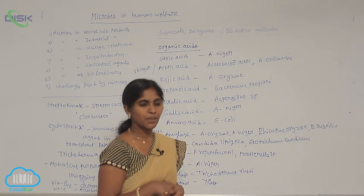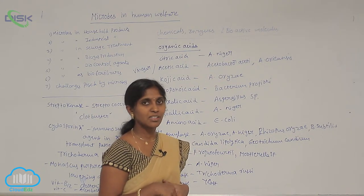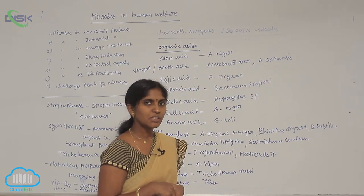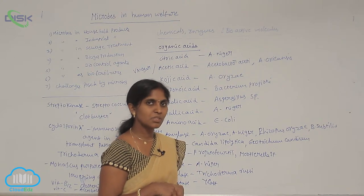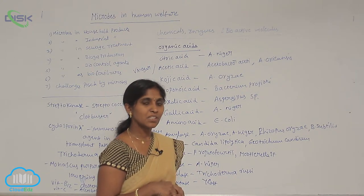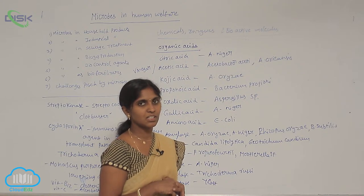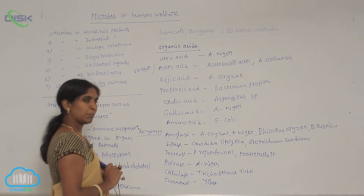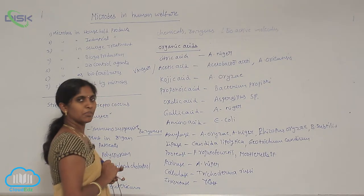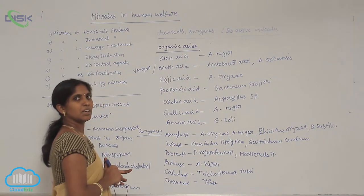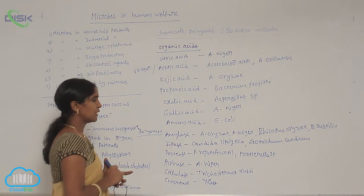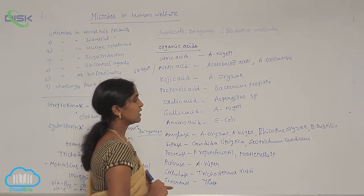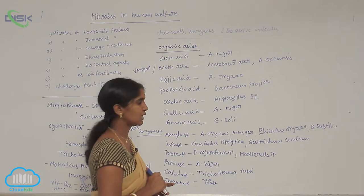In bottled juices, pectin and protein are digested using pectinases and proteases, which are commercially synthesized in industry. Amylases are extracted from cultures of Aspergillus oryzae, Aspergillus niger, Rhizopus oryzae, and also Bacillus subtilis.